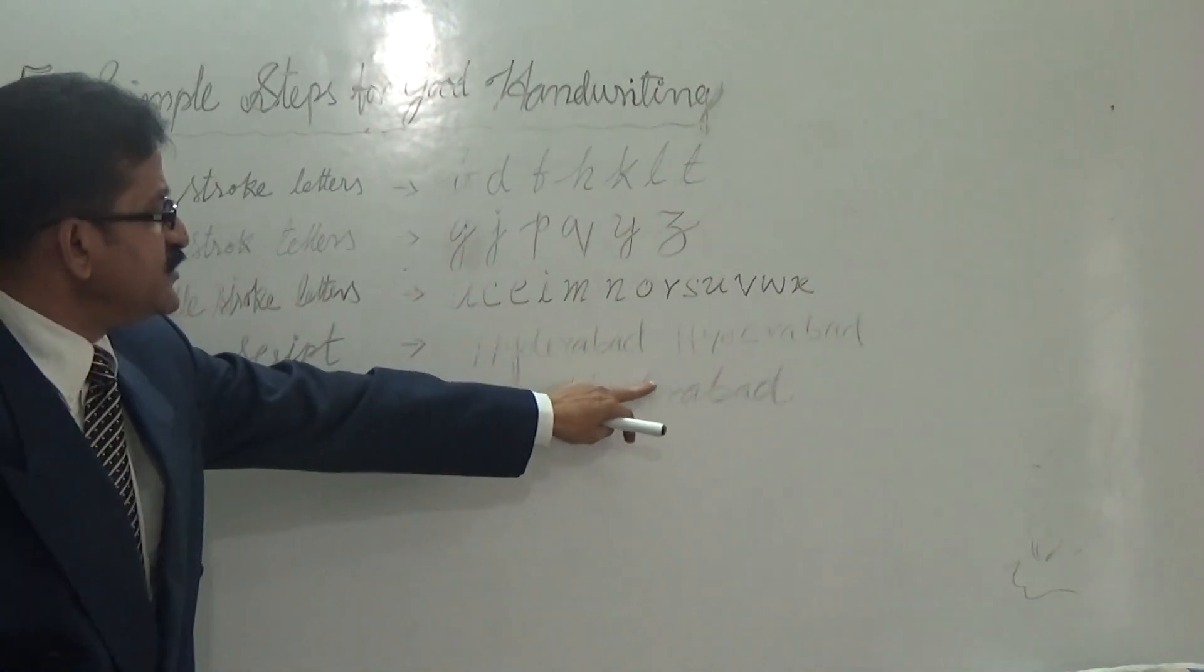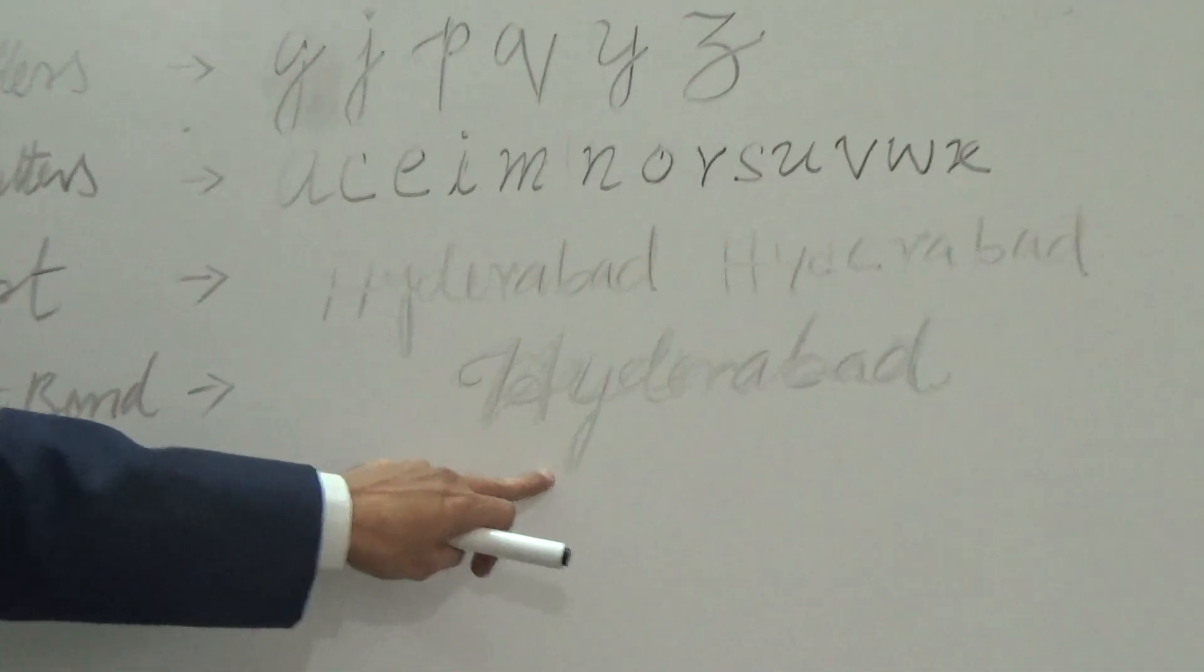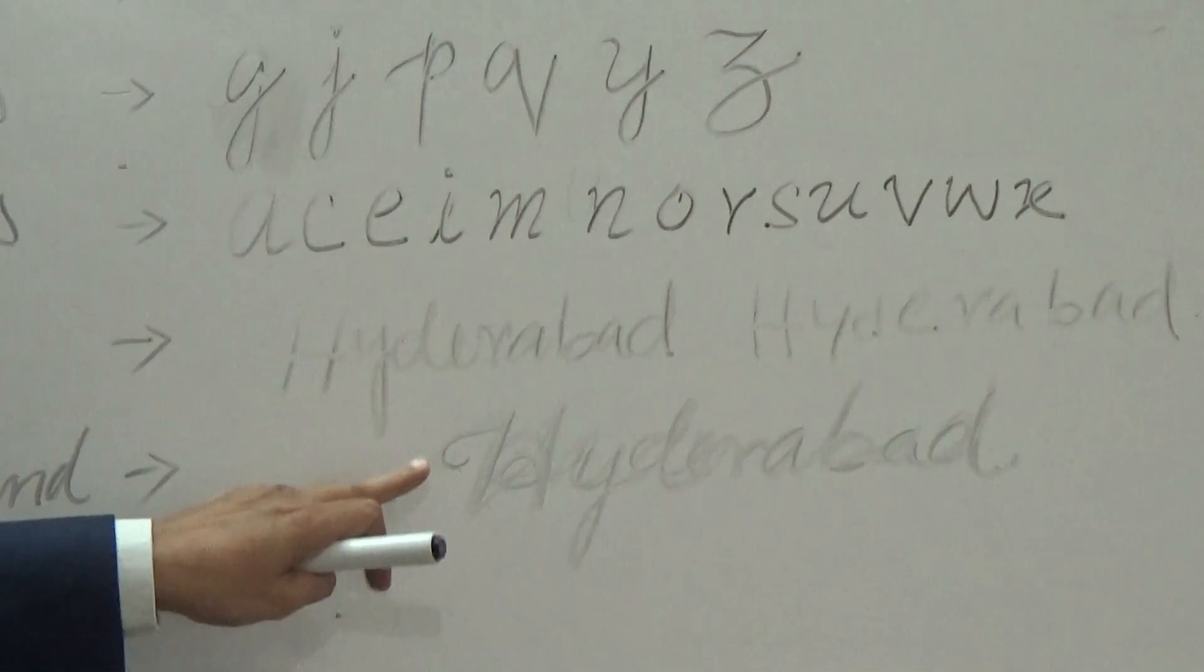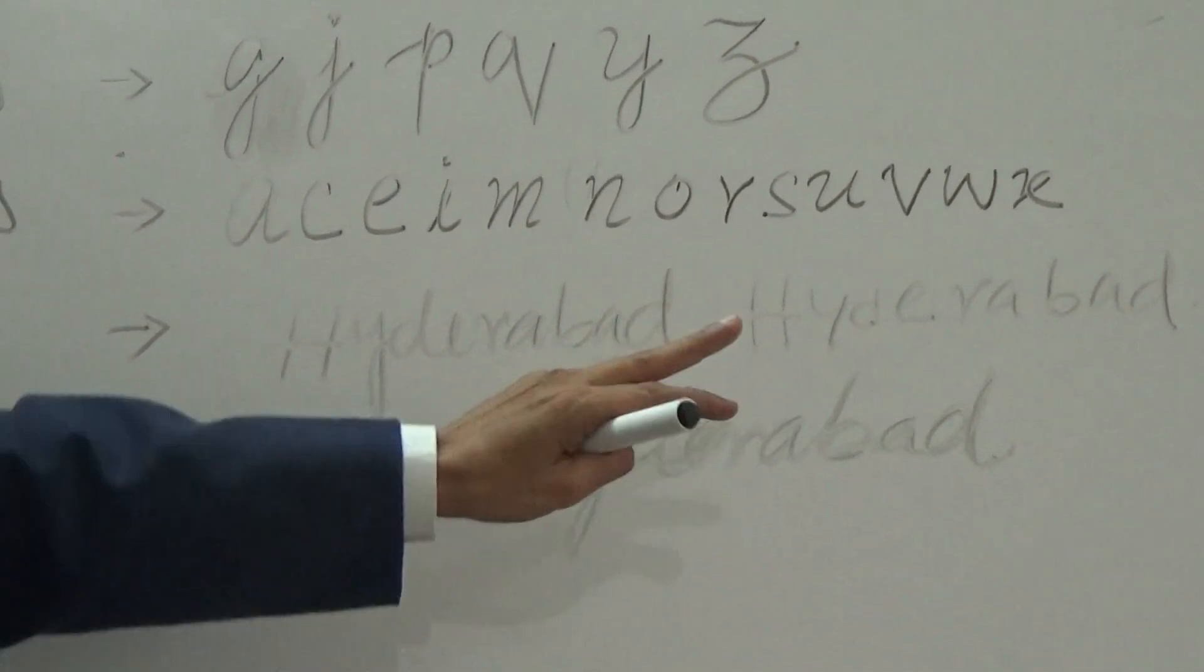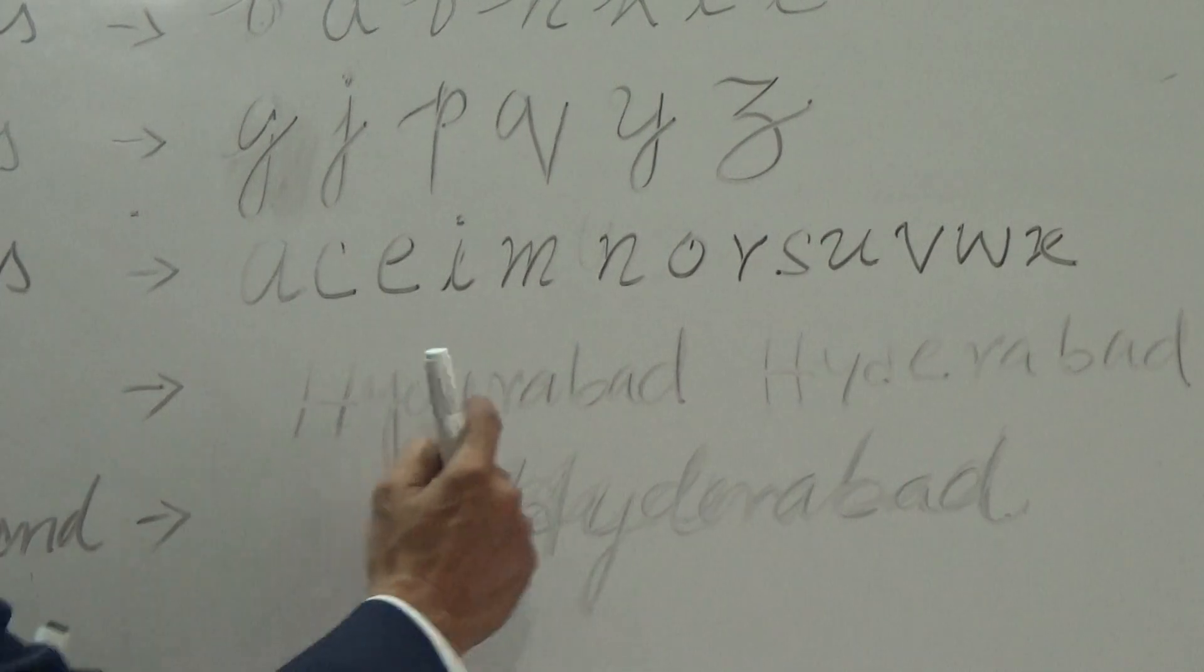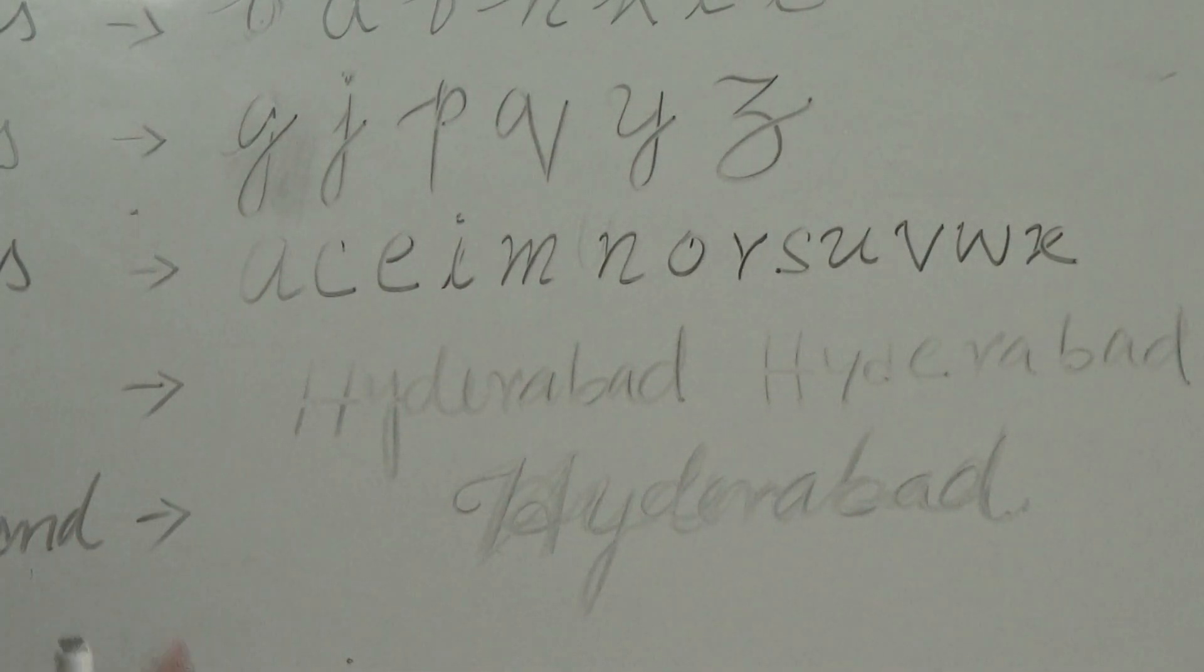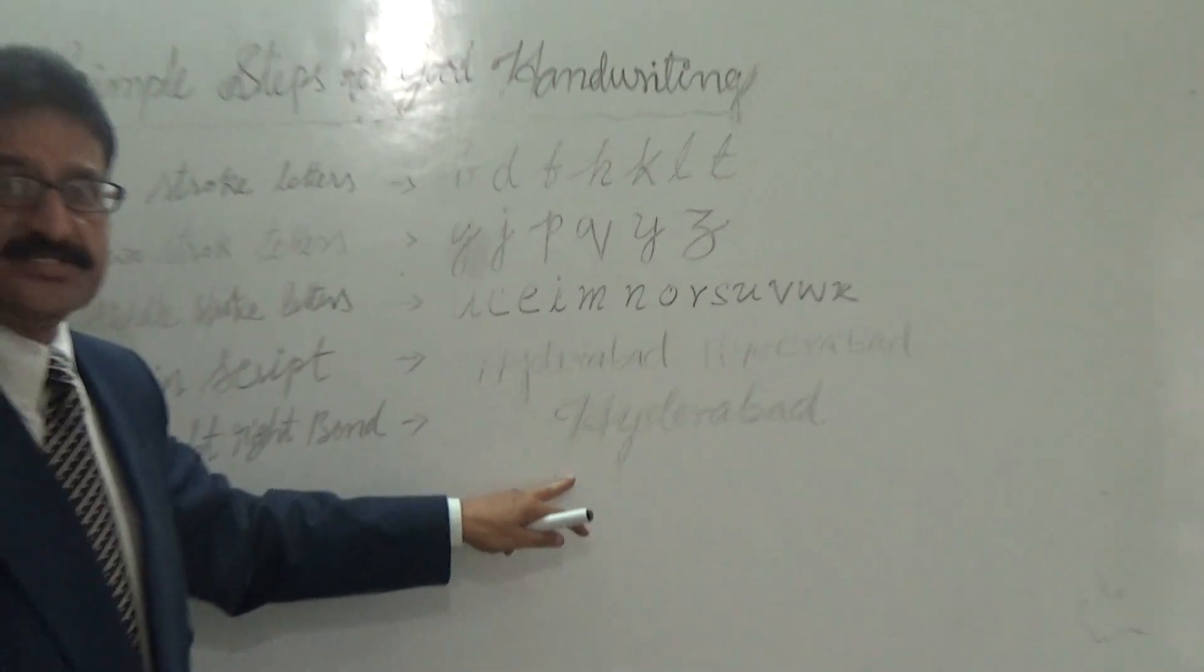For example, this is top stroke. This is down stroke. And these are the middle stroke letters. And we followed the chain script. And we used one point, a slight right bend. So if you compare these three things, first one, second one, and third one, which looks nice? Ultimately, the third one, because it is followed with all these five points.